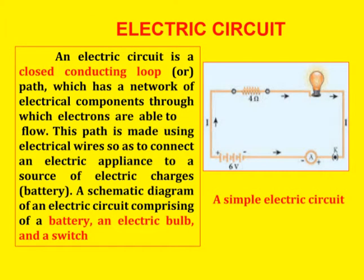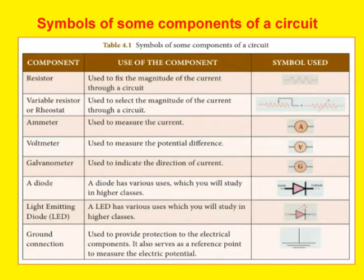Next, electric circuit. An electric circuit is a closed conducting loop or path made using electrical wires to connect an electric appliance to a source of electric charges. See the schematic diagram of an electric circuit comprising of a battery, electric bond, and a switch. Here are some examples of components of a circuit — this could be asked in three-mark or objective type questions.